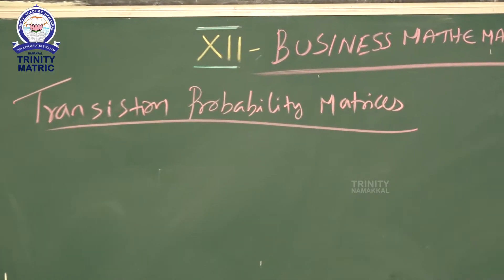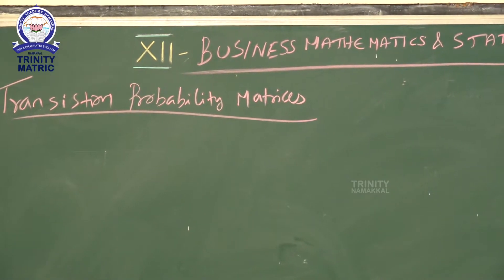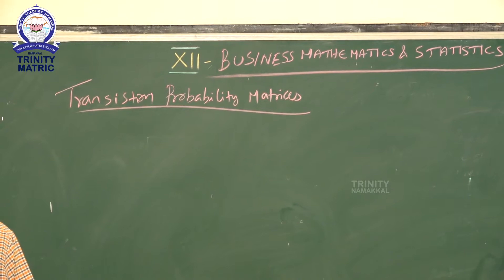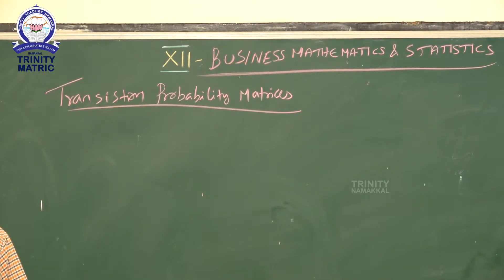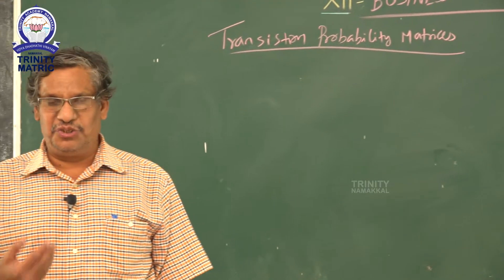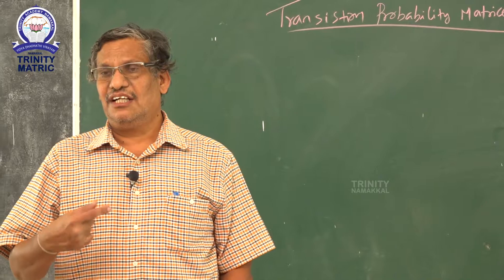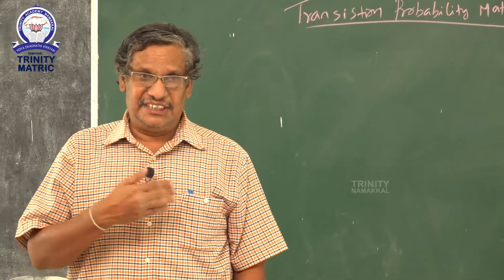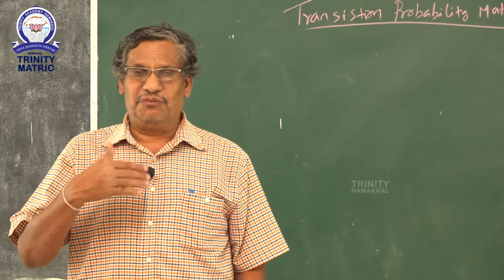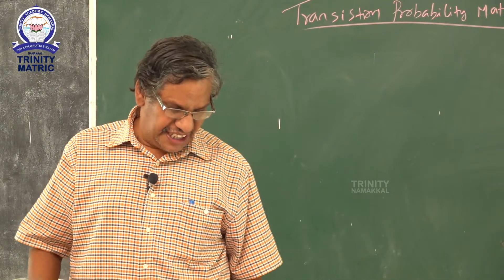Now I am explaining forecasting the succeeding state when the initial market share is given. Forecasting means what will happen after a certain period. For example, when you are born, you are a newborn baby. After one year, you are grown up. Likewise, last year you studied 11th standard, now you are in 12th standard. So after one stage, you are promoted yourself. Like that, we are moving from one stage to another.